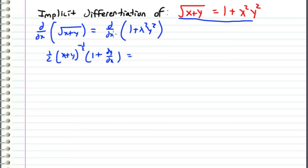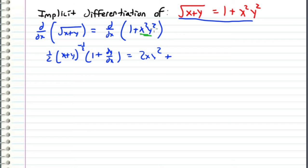This is going to equal the derivative of the right-hand side with respect to x. The derivative of one with respect to x is zero, so the only term we have to worry about is the x²y² term. Using the product rule and differentiating x² first, we get 2x times y², and then differentiating y² gives 2x²y times dy/dx, because we have to implicitly differentiate y since it's a function of x.